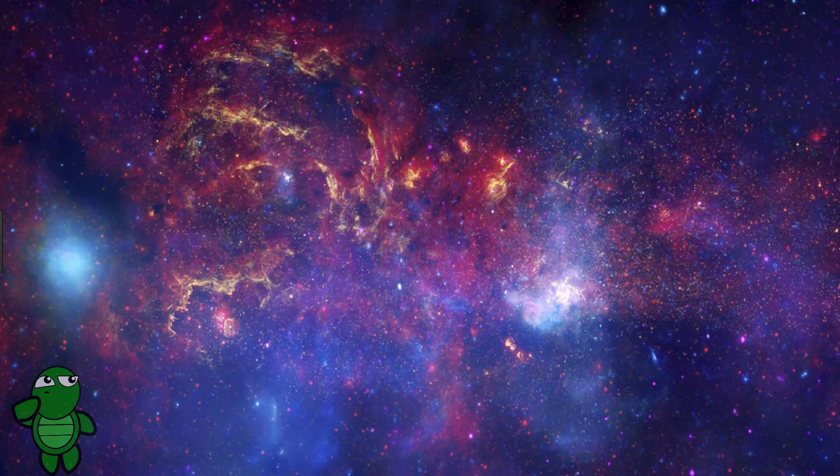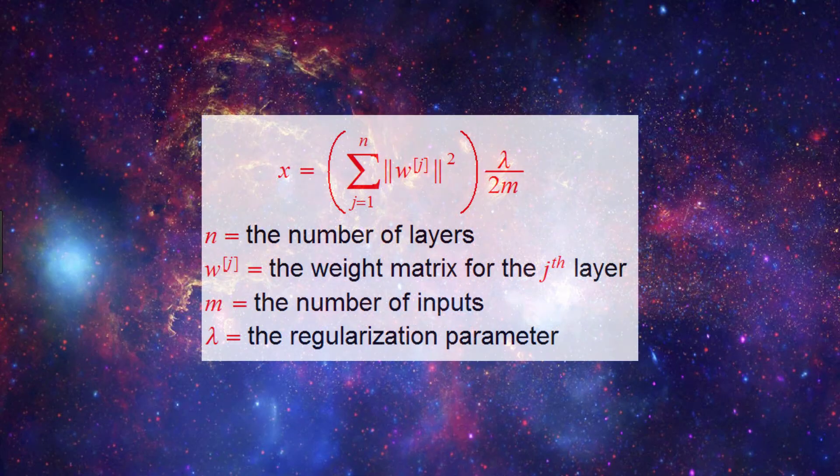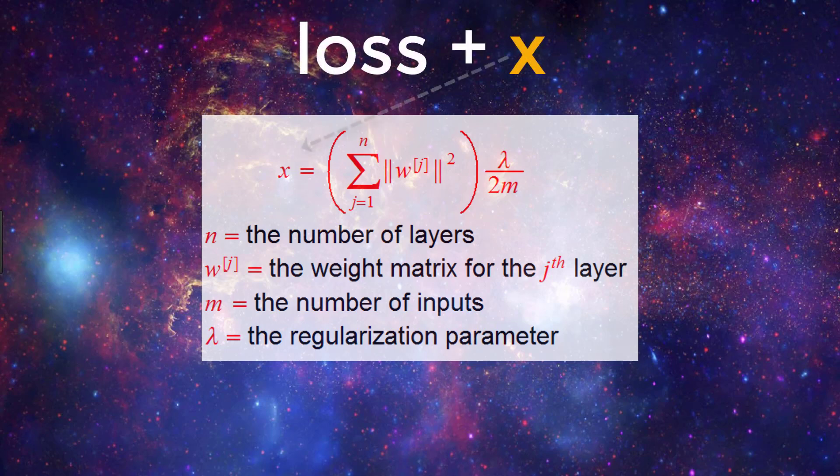So why does regularization help? Well, using L2 regularization as an example, if we were to set lambda to be a relatively large number, then it would incentivize the model to set the weights close to zero because the objective of SGD is to minimize the loss function. And remember, our original loss function is now being summed with the sum of the squared matrix norms, which is then being multiplied by lambda over 2m.